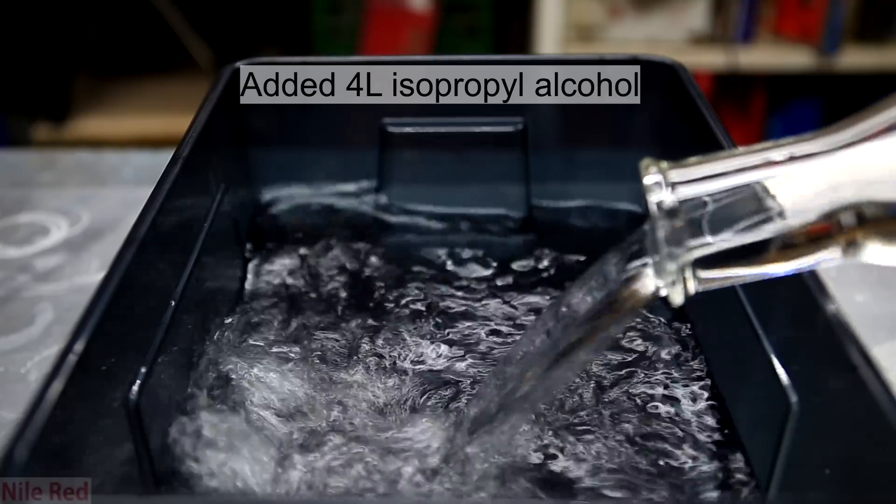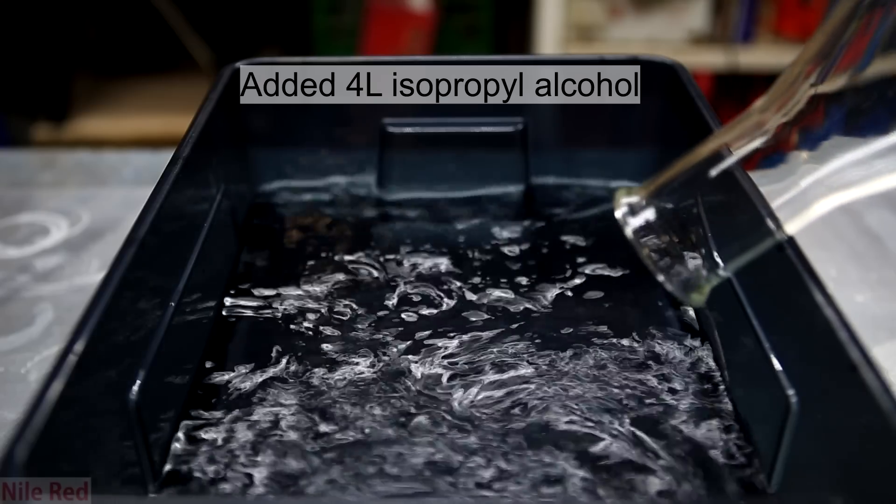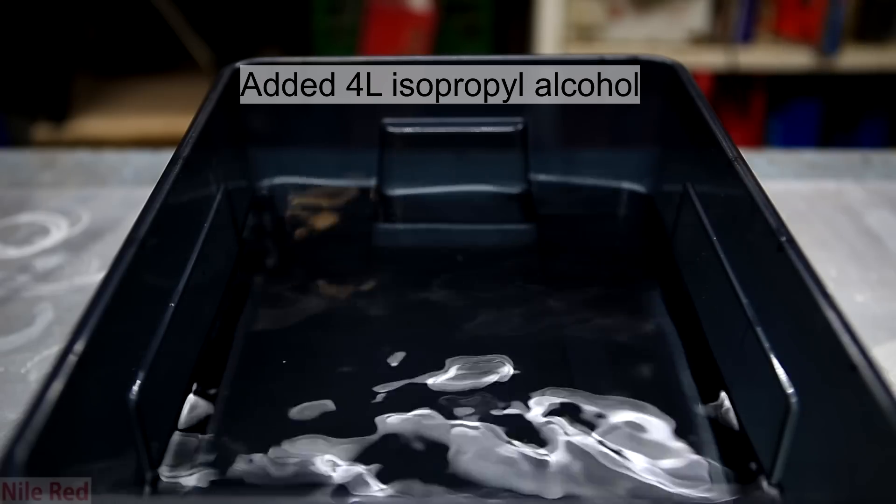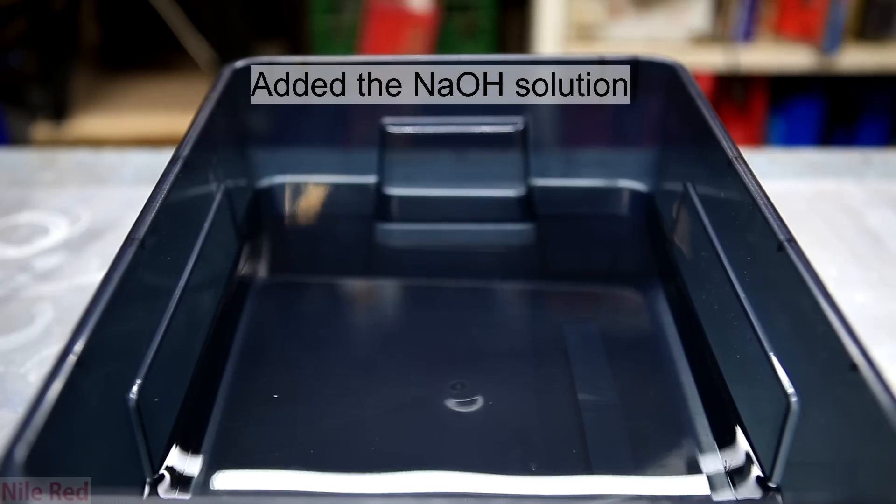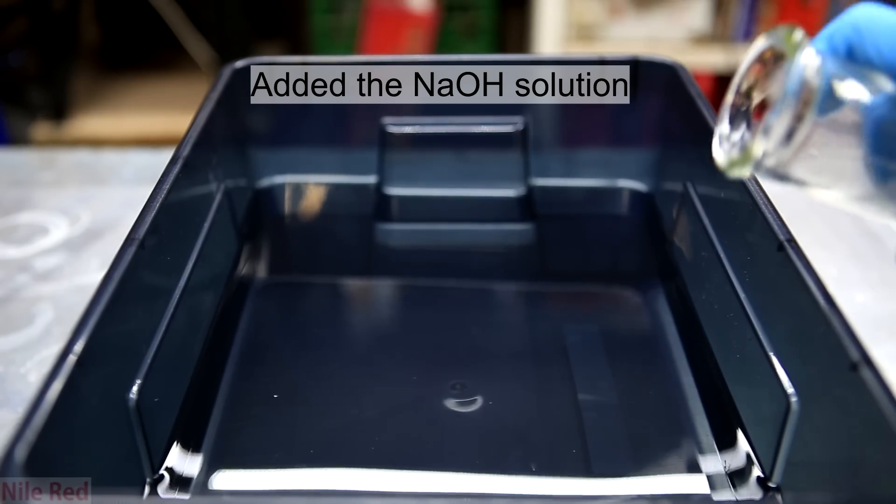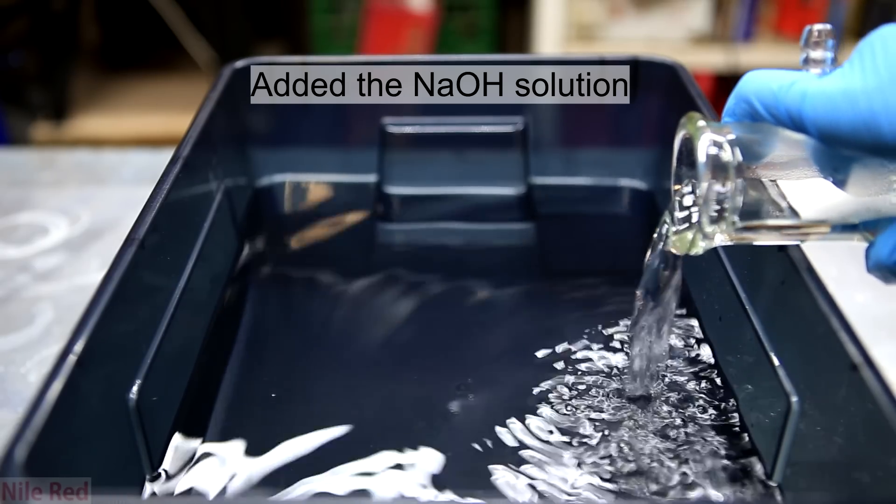Once the sodium hydroxide solution had cooled to around room temperature it was possible to proceed to the next step. To do this is quite simple, you simply just pour the sodium hydroxide solution directly into the isopropyl alcohol.